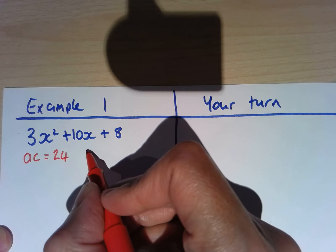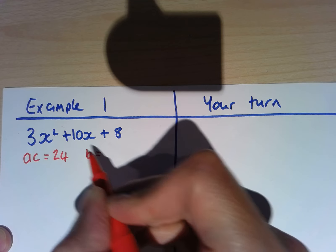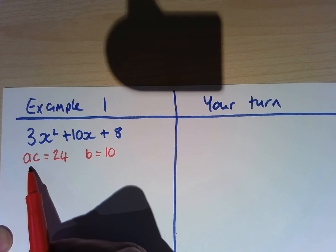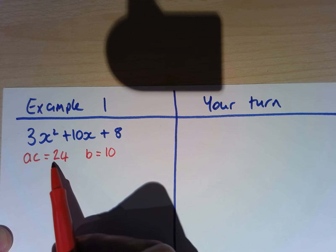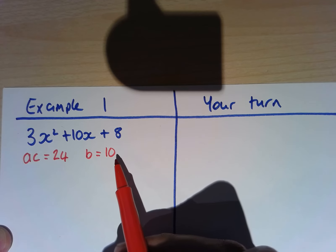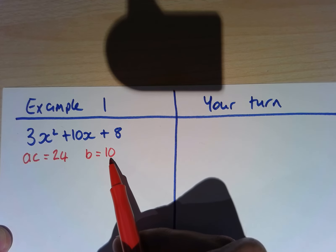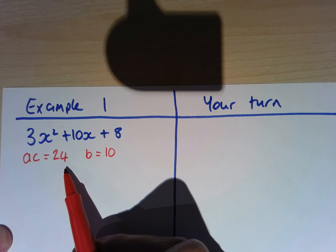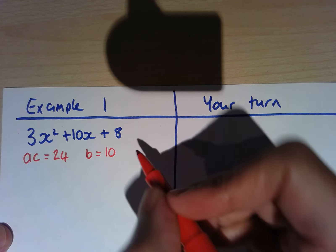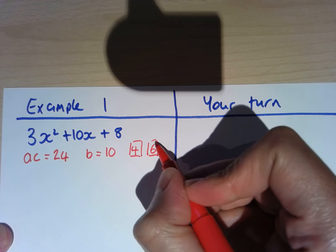B is going to be equal to 10. So we're looking for two numbers that multiply together to give us 24 but add together to give us 10. The two numbers are positive 4 and positive 6. 4 times 6 is 24 and 4 plus 6 is 10. So we're going to have the number 4 and the number 6, and they're both positive.